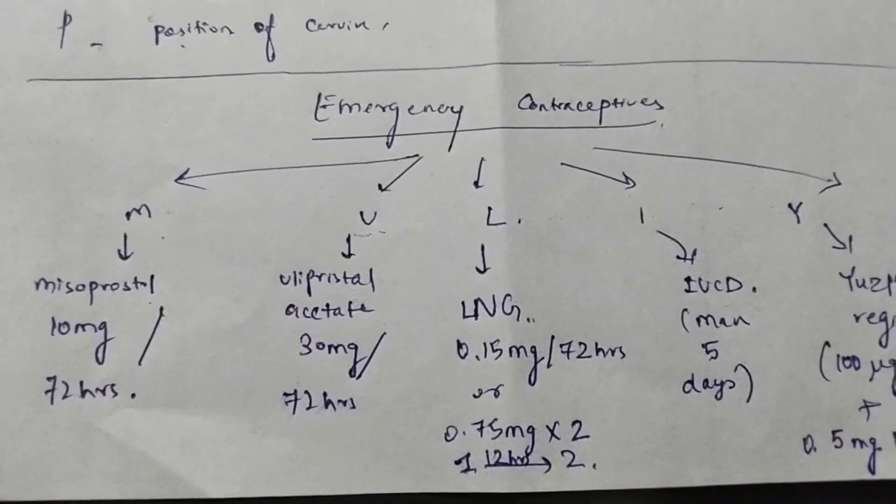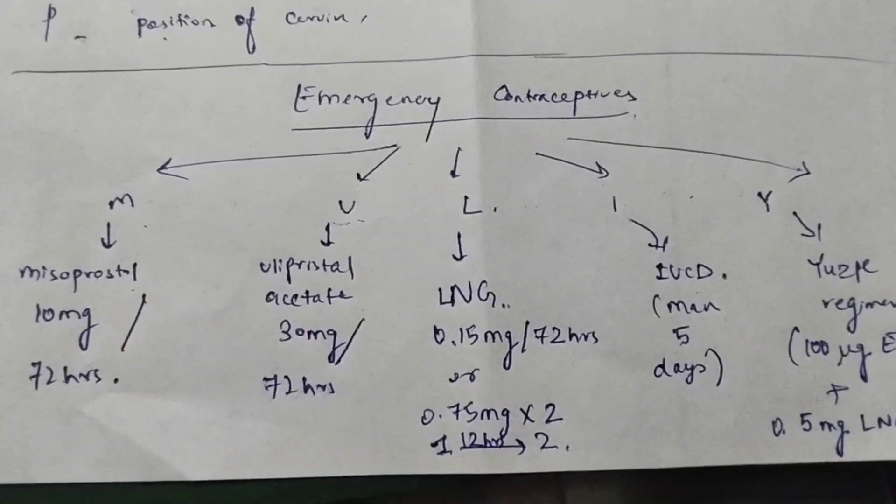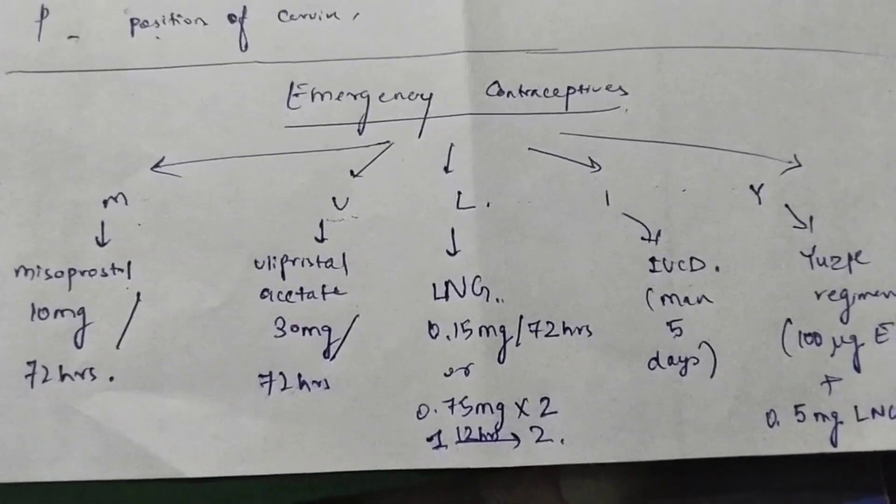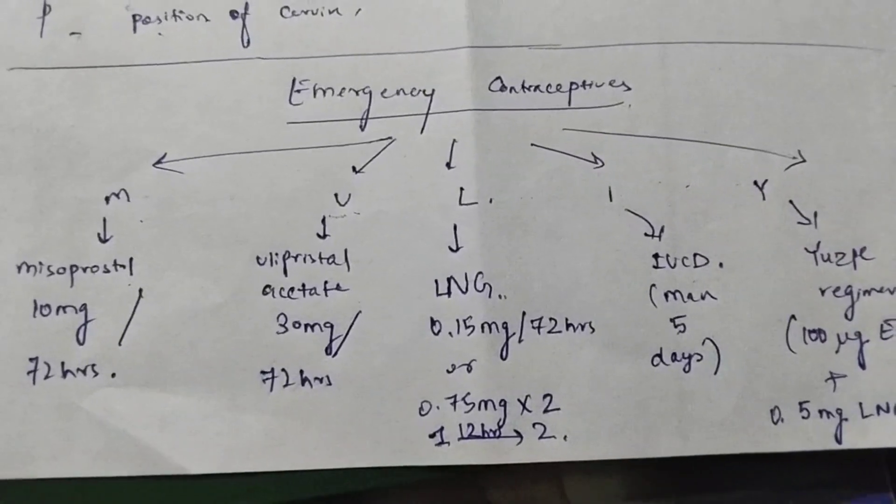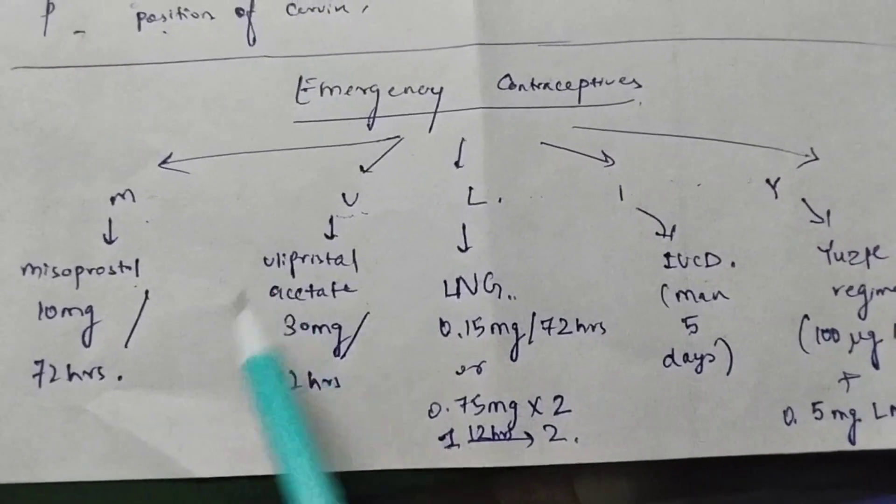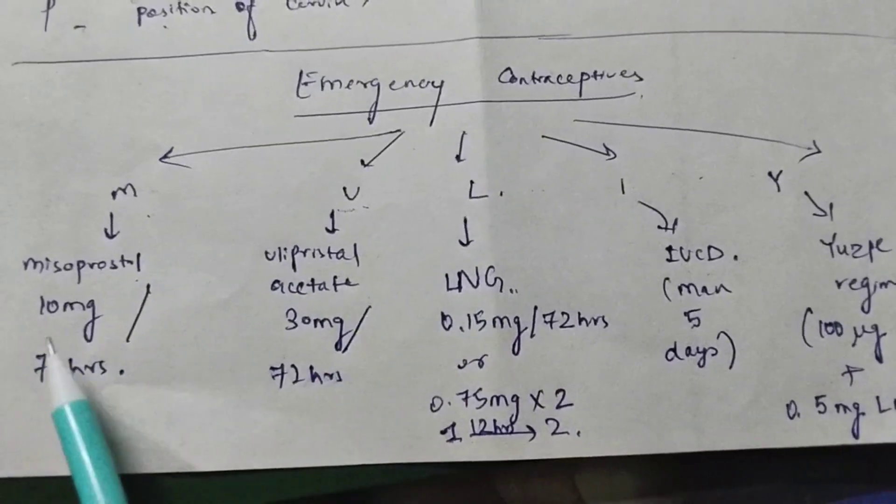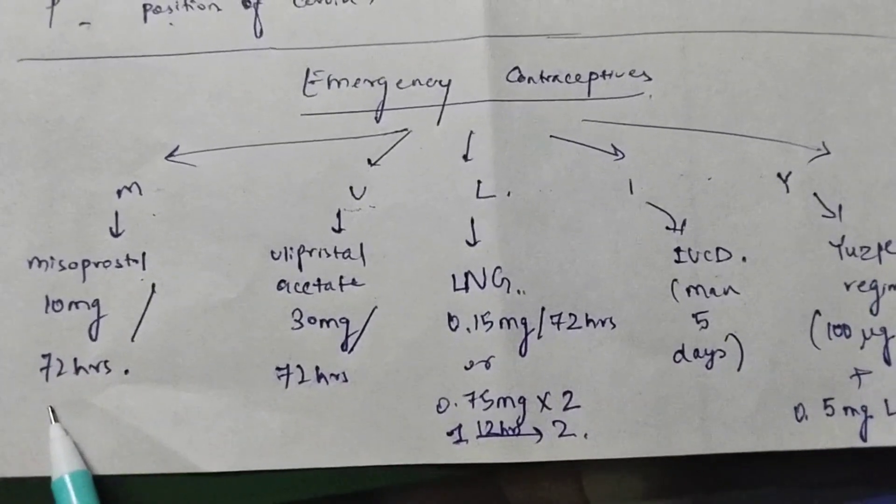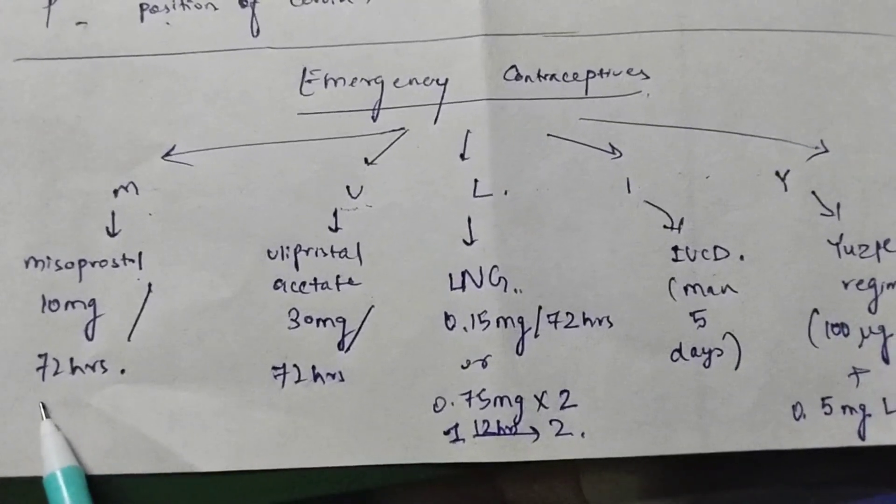Now we have to see how much of these drugs are given and till what time they are effective after unprotected sexual intercourse. M, mifepristone, you have to give 10 mg within 72 hours of coitus.